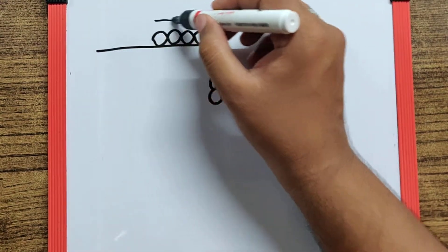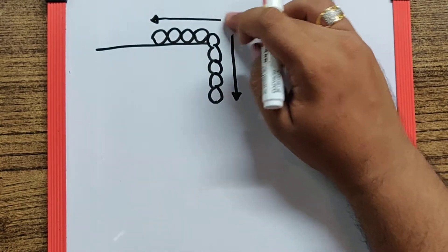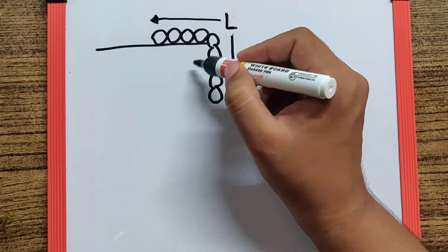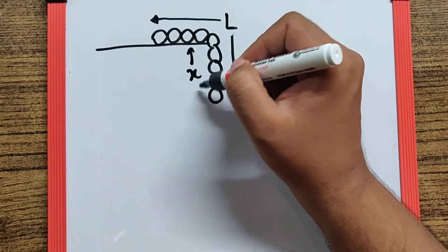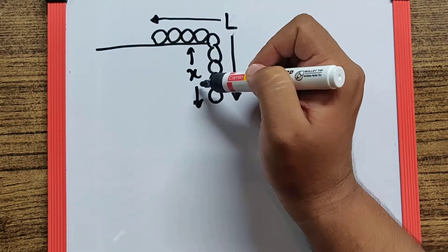Let's say the total length of the chain is L and the part which is hanging is X, and therefore the part which is on the top becomes L minus X.